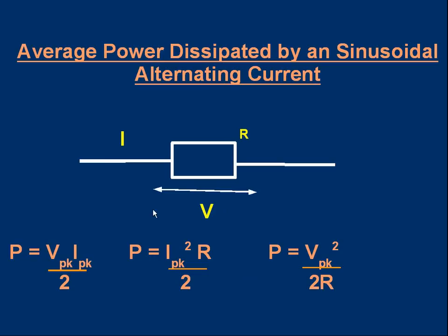That means we've got a way of working out the average power dissipated by a sinusoidal alternating current. Here's a resistor with alternating current I and alternating voltage V. The average power, which I'm just showing as P...